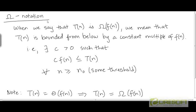It is sort of the mirror image of the Big O notation. When we say that t is Big Omega of f, we mean that there exists a constant greater than 0 such that t is bounded from below by a constant multiple of f, for n larger than some threshold. In other words, c times f needs to be less than or equal to t. So this is specifying a lower bound.